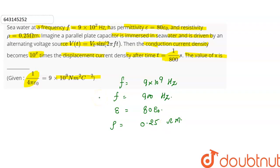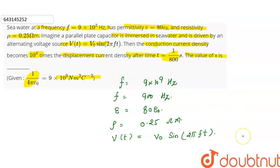We have to imagine that a parallel plate capacitor is immersed in seawater and is being driven by an alternating voltage source. The alternating voltage source gives V = V₀ sin(2πft).